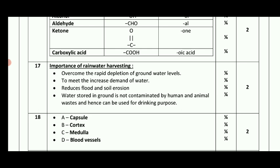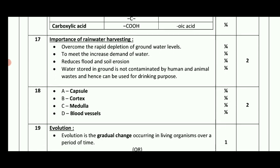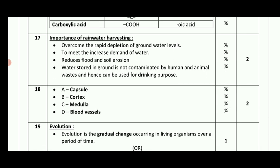The next one is the adrenal gland diagram. Label: A — capsule, B — cortex, C — medulla, D — blood vessels. Write it down for the mark. The next one is evolution.